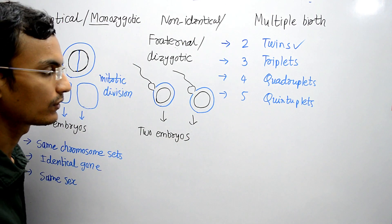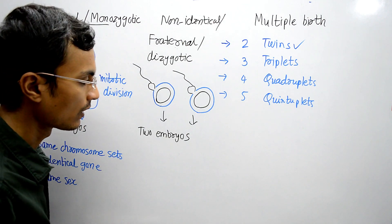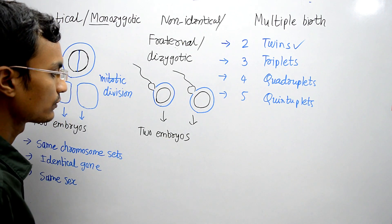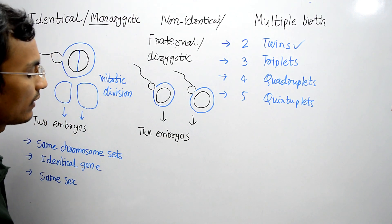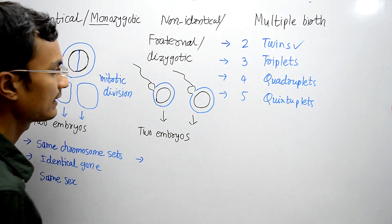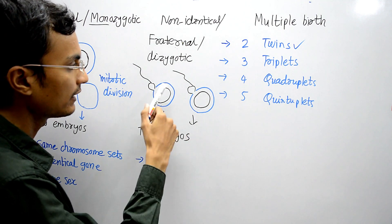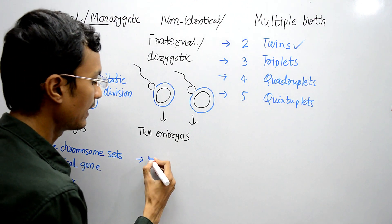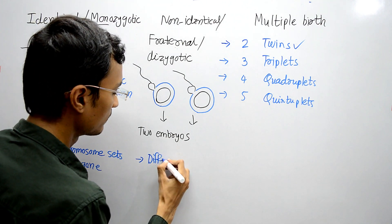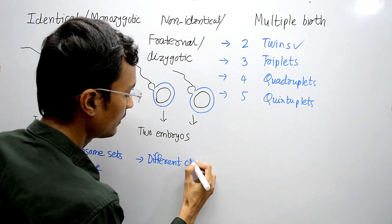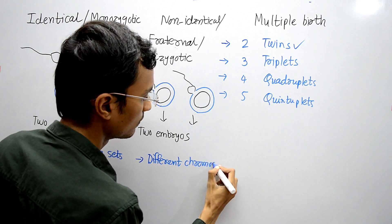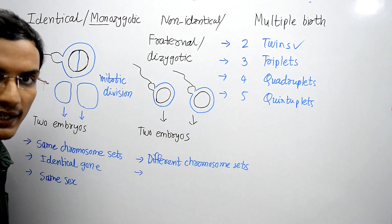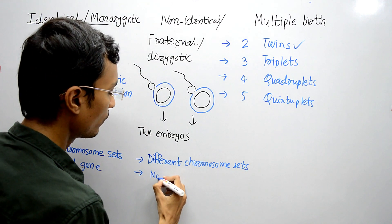These two different zygotes develop into two different embryos and give birth to two different individuals. Since the ova and sperms are different, they have different chromosome sets and non-identical genes.